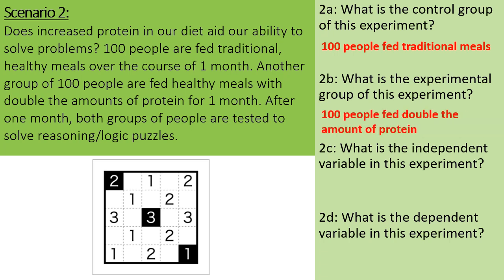Part C, the independent variable. How do these two groups differ? One group is fed traditional meals and one is fed meals with double the amount of protein. So the independent variable is the type of meals that they are provided. And then part D, the dependent variable is the data being measured — in this case, their ability to solve these logic and reasoning puzzles.